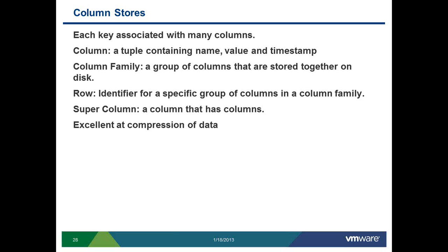A row basically identifies a specific group of columns in a column family. There is also a super column — as Cassandra describes it — which is a column that contains multiple columns. One of the major important features of column stores is that they have very excellent data compression, because you are storing column-wise data and based on data sparsity, the compression can be significantly better.